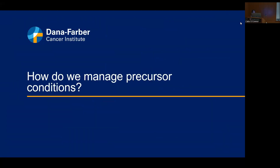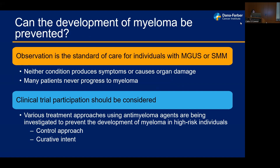How do we manage precursor conditions? Currently, the standard of care for individuals with MGUS and smoldering myeloma is observation, especially because the risk of progression is very low in individuals with MGUS and low-risk smoldering myeloma — these individuals may go many years or never progress to active myeloma. However, for the subgroup with high-risk smoldering myeloma who have a very high risk of developing active disease, clinical trials have been helpful in answering what the right treatment is, who to treat, and when.